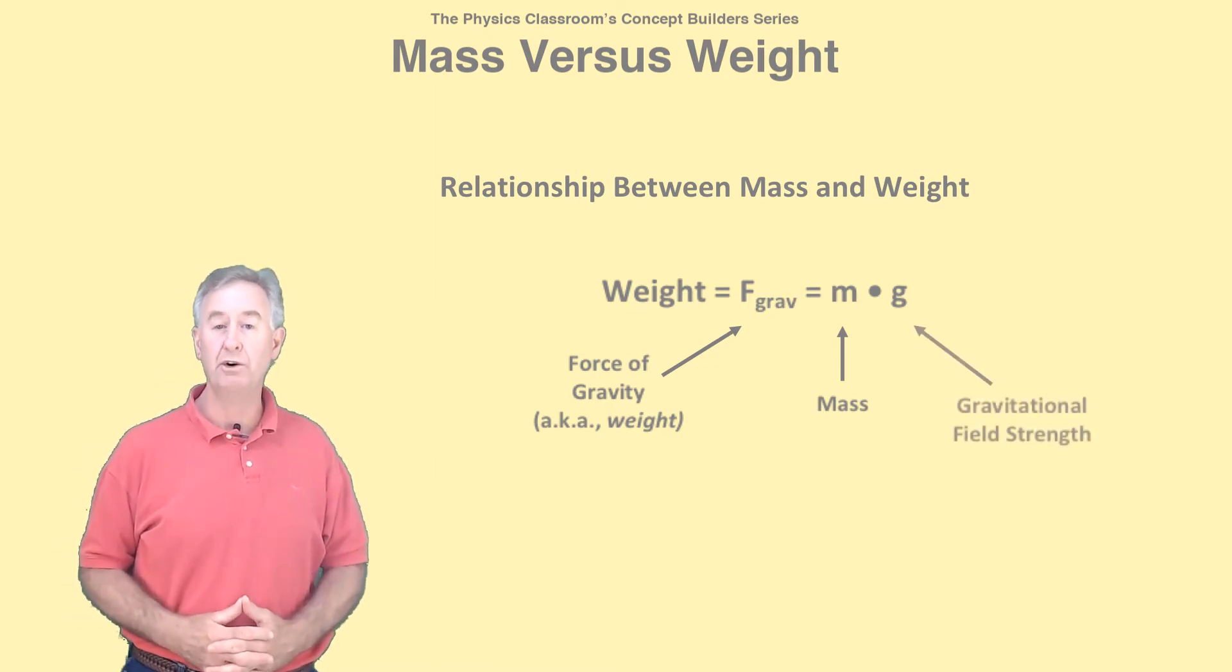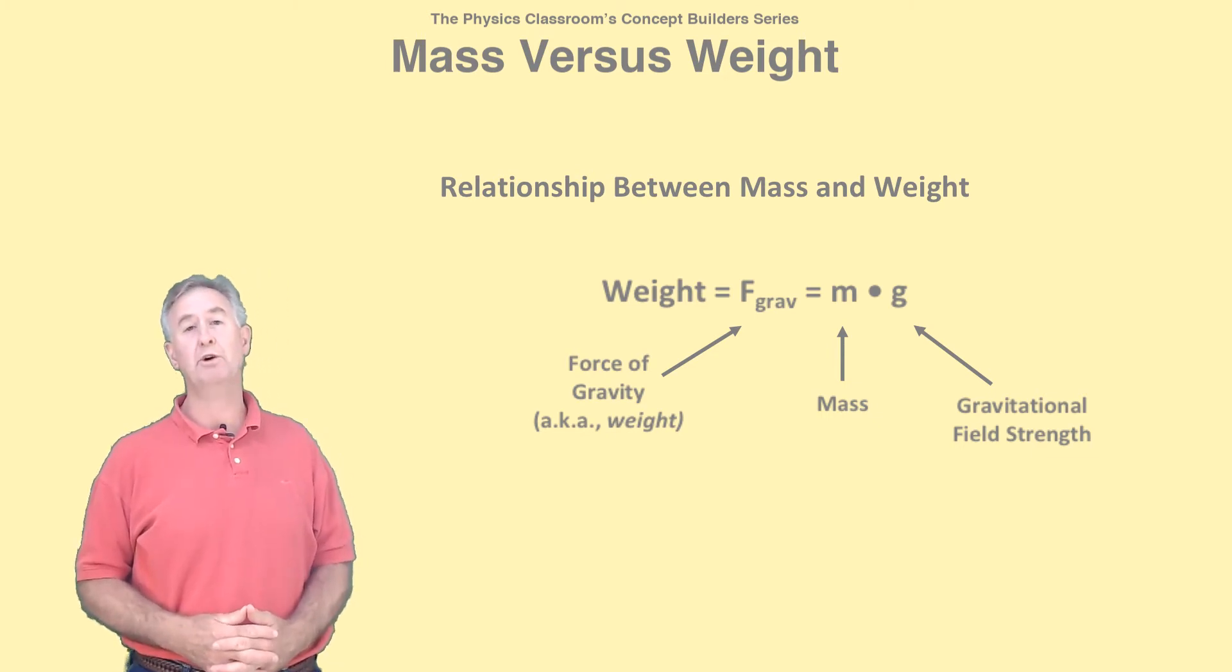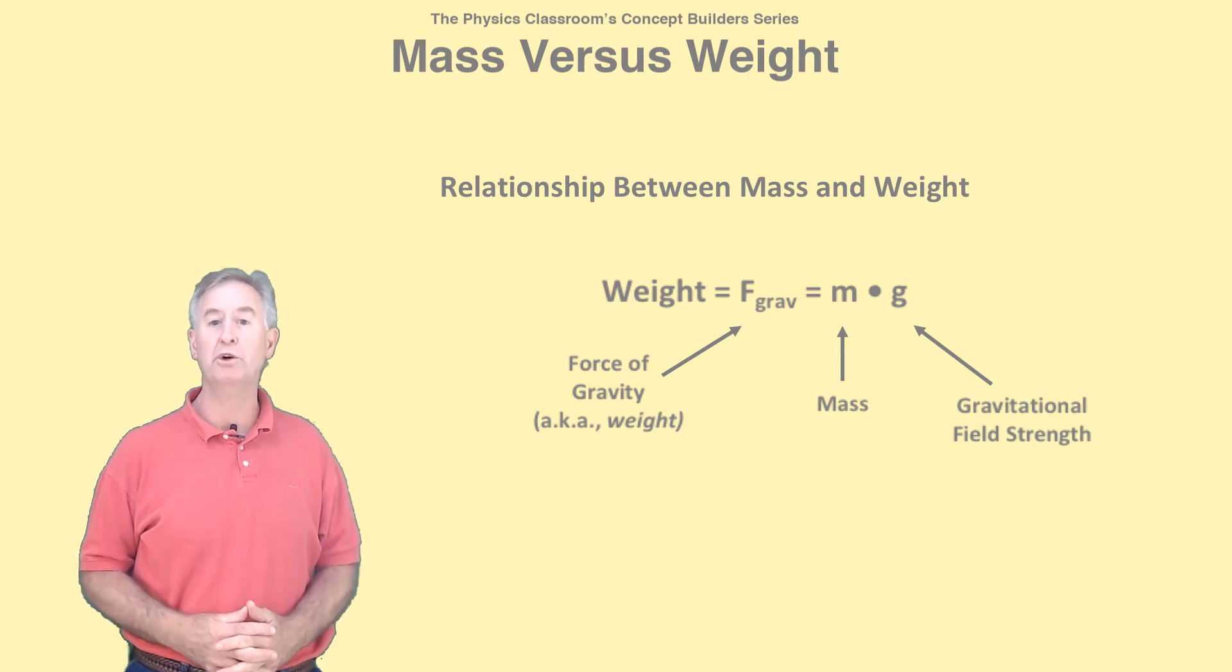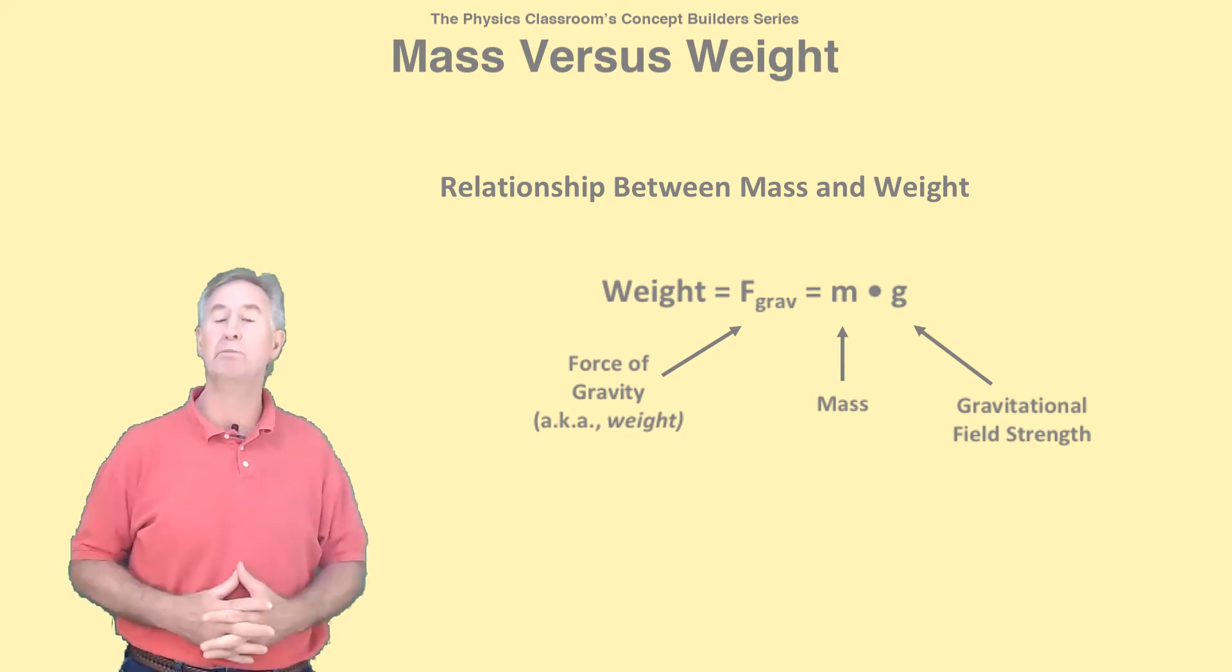g is known as the gravitational field constant. On Earth, it's 9.8 Newtons per kilogram. On the moon, it's about 1.7 Newtons per kilogram. And on Mars, it's about 3.8 Newtons per kilogram.